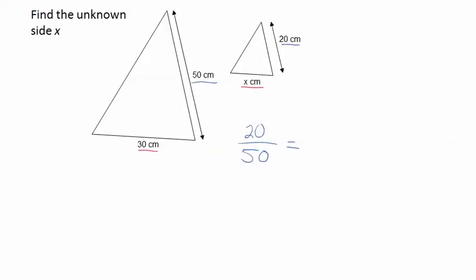that side and that side, and because we used the side from this triangle first in this proportion, we need to use the corresponding side from this triangle first in this proportion. So 20 is to 50 as X is to 30.